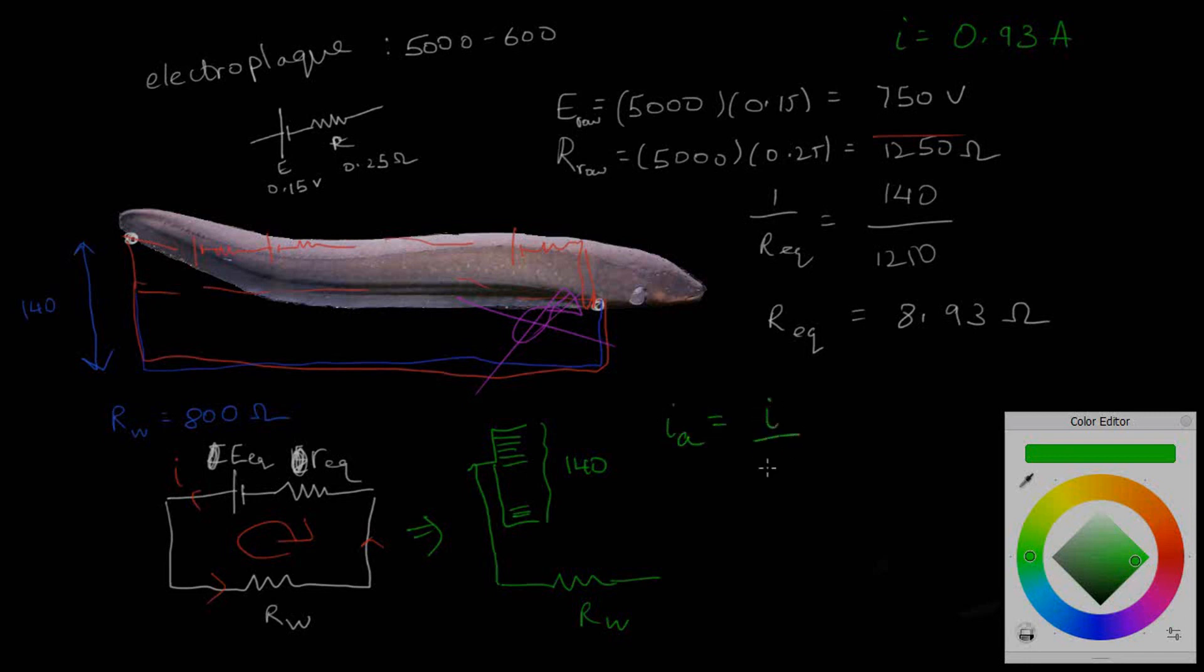So the current across each arm, I_arm, equals I divided by 140. So that's 0.93 by 140, and this would be around 6 milliamps, which is quite tiny compared to 0.93.